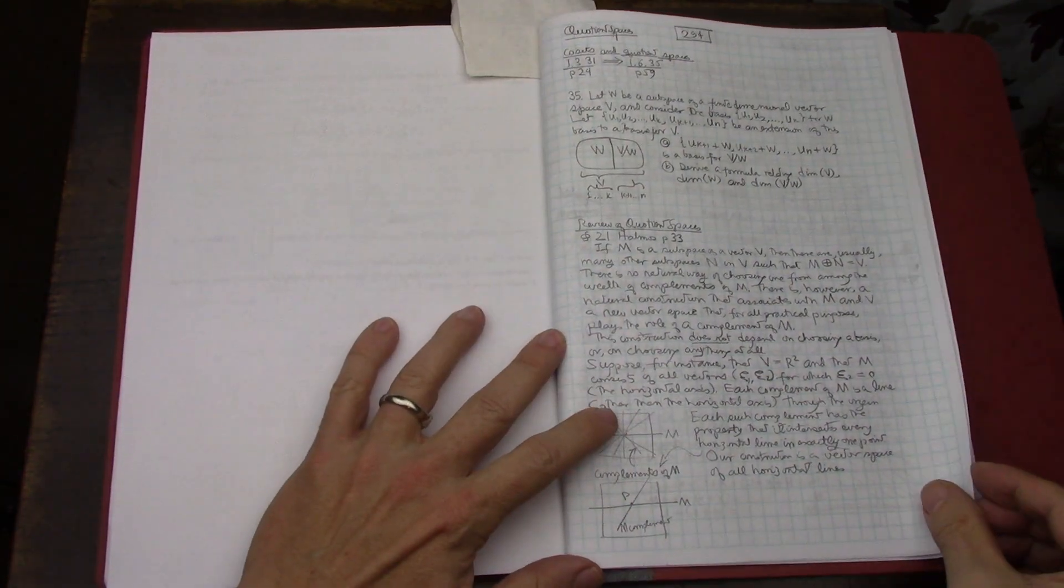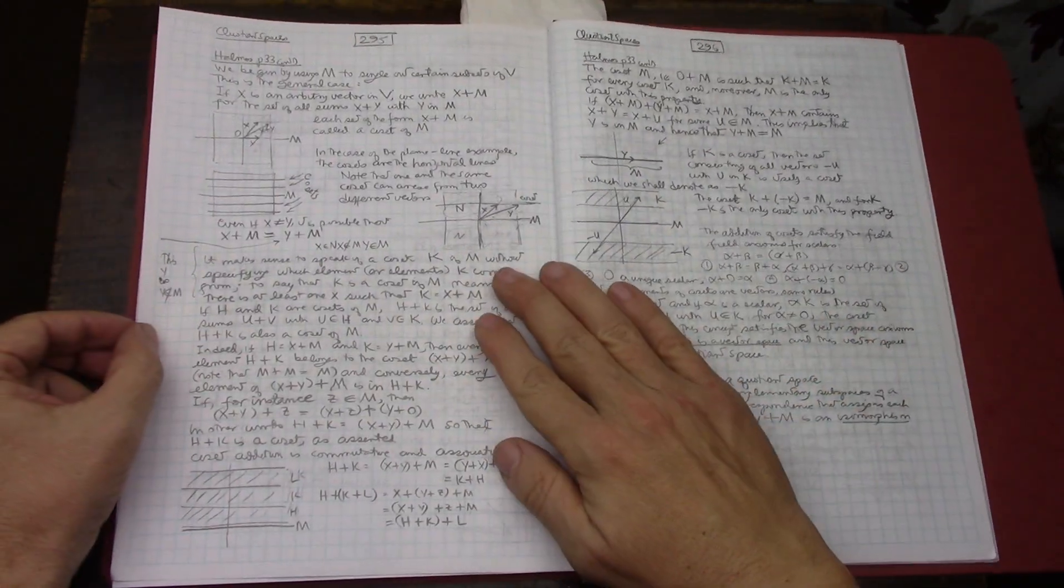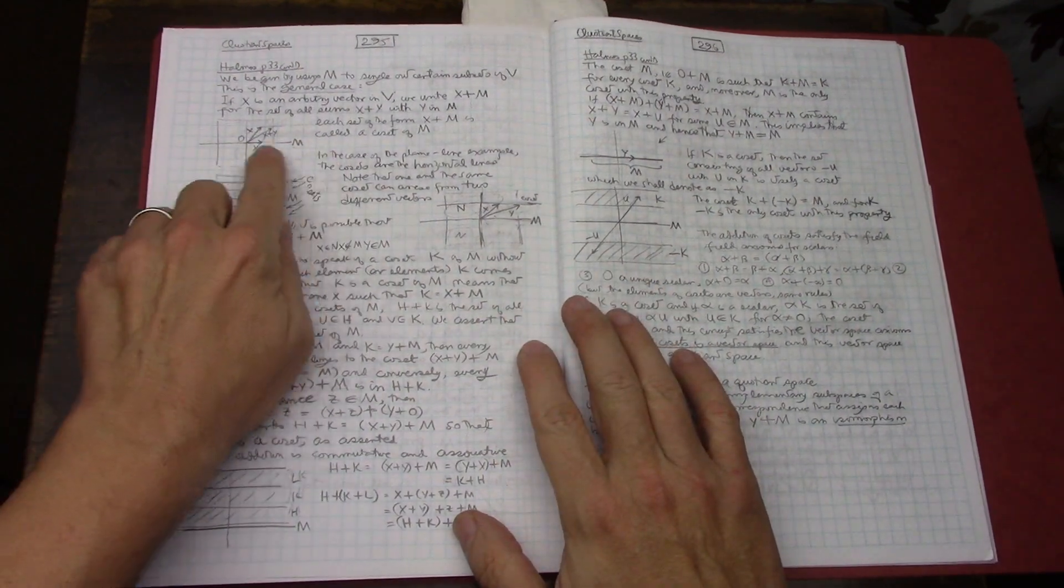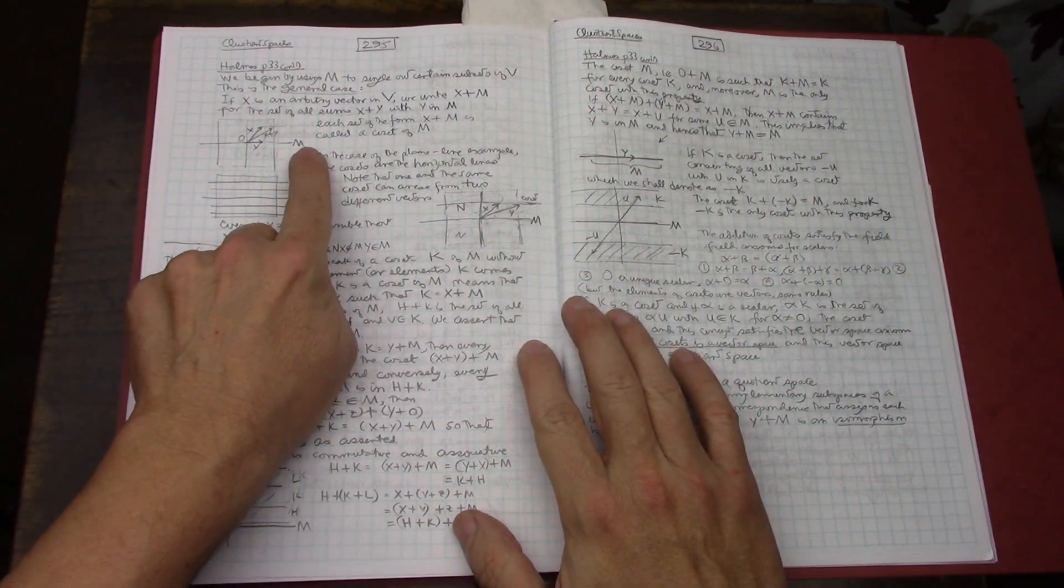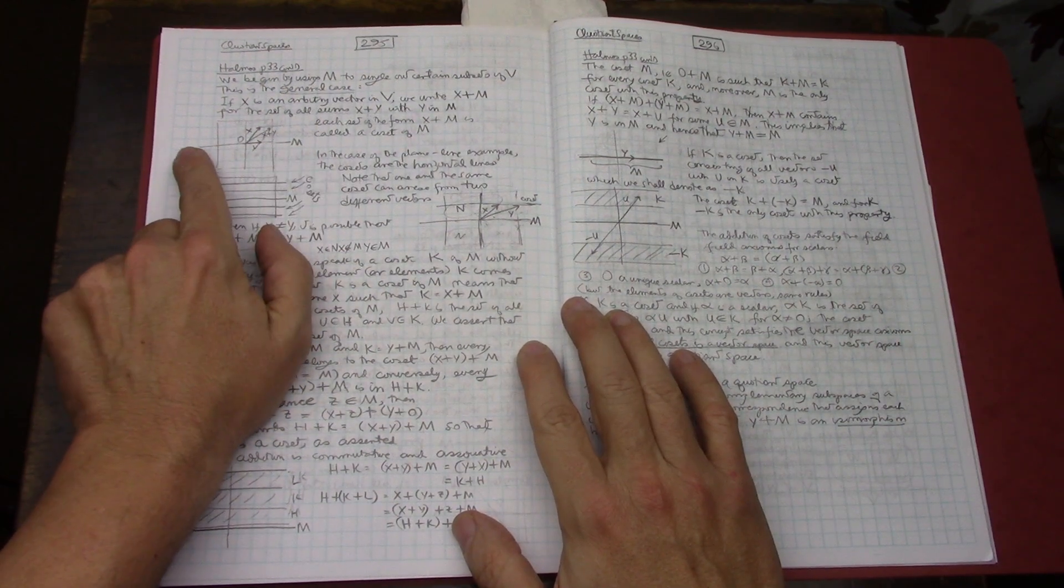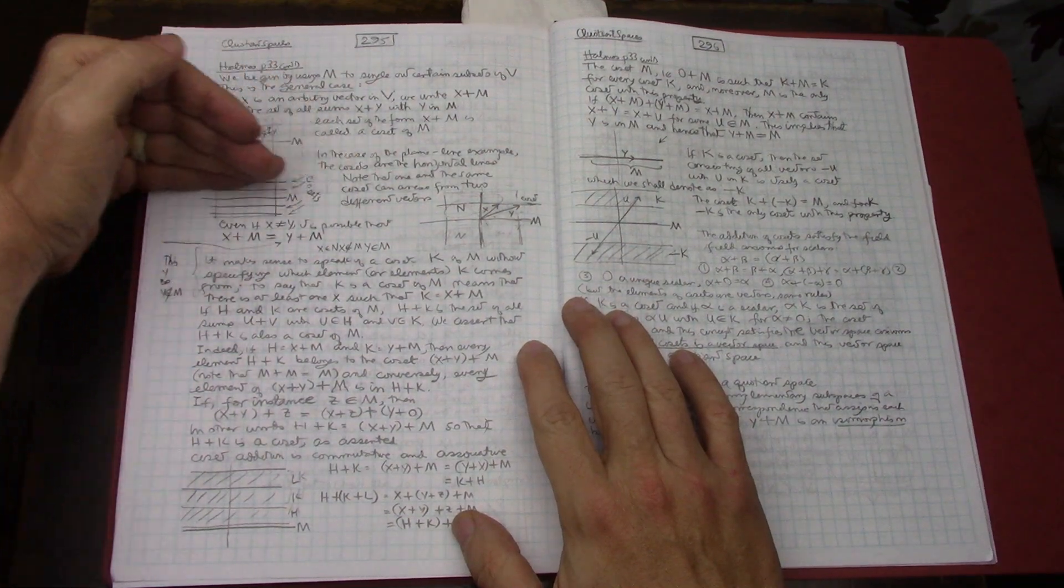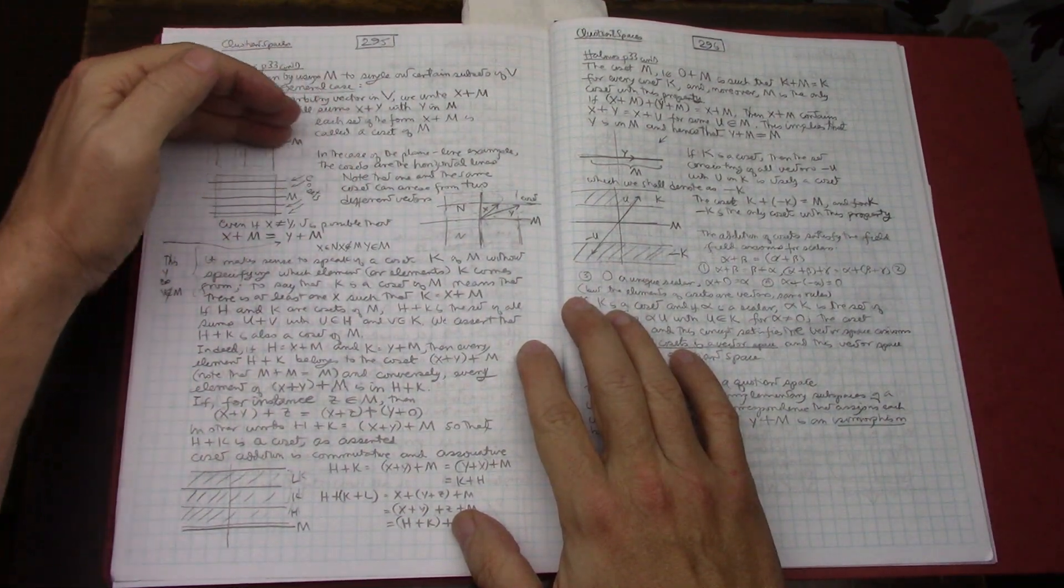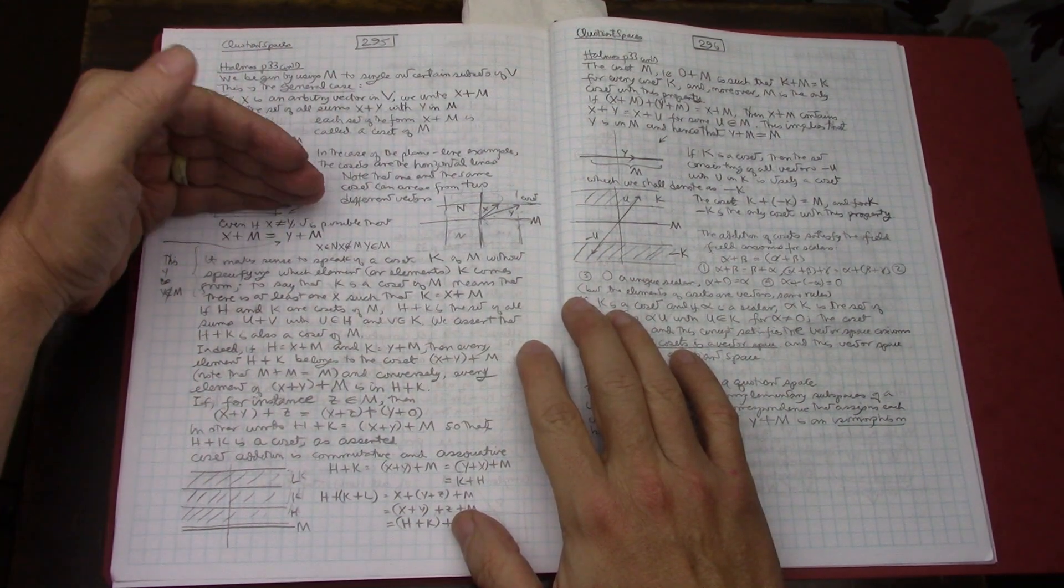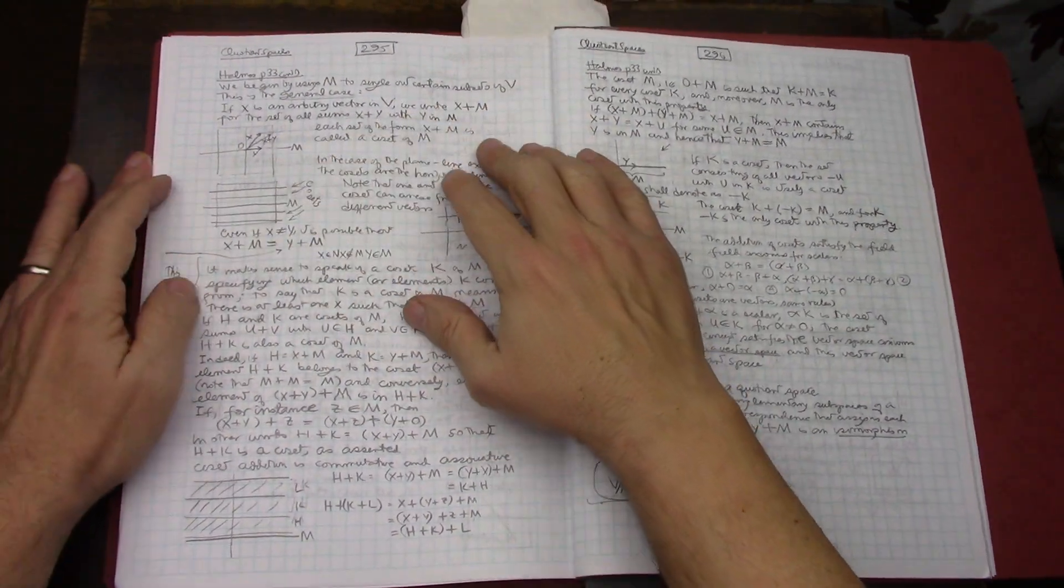So I did take the time to go through and read in Halmos about quotient spaces. Halmos sets up a very interesting special case where your M vector space is just the X line and then all the cosets are all the lines that are parallel to the X axis but are not crossing zero.